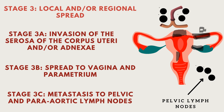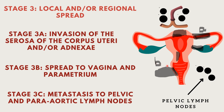In Stage 3b, there is spread to the vagina and parametrium through direct extension — the cancer breaches the serosa and spreads to the parametrium. You can use the mnemonic 'B for below' for Stage 3b, as this involves structures below: the vagina and parametrium.